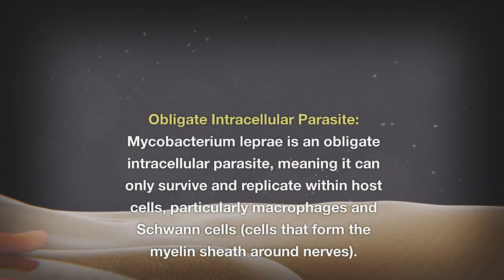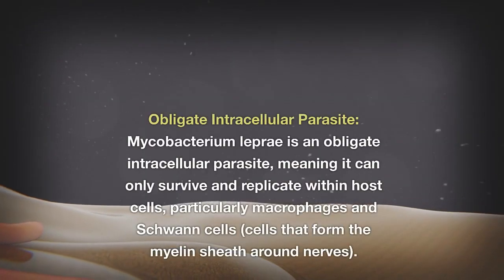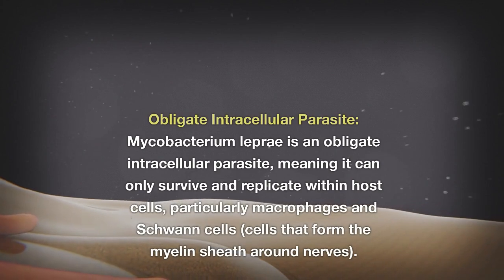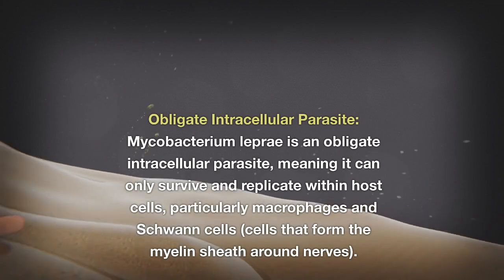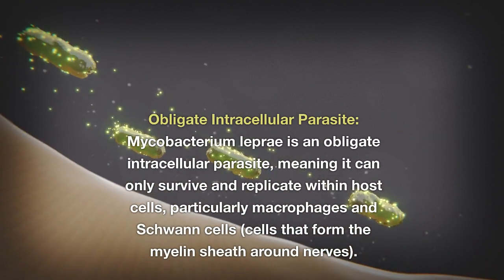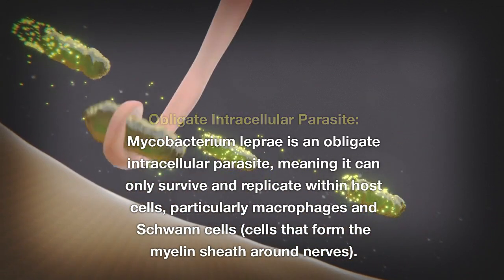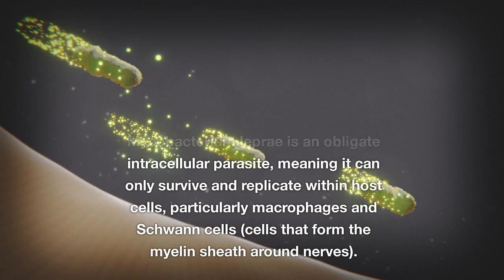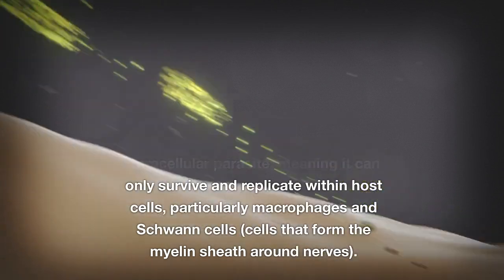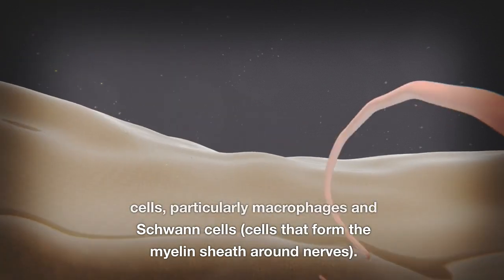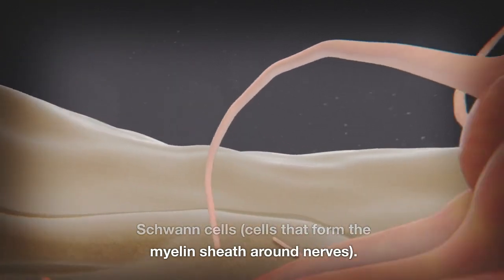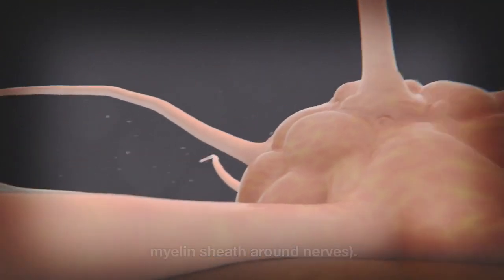Obligate Intracellular Parasite. Mycobacterium leprae is an obligate intracellular parasite, meaning it can only survive and replicate within host cells, particularly macrophages and Schwann cells — cells that form the myelin sheath around nerves.